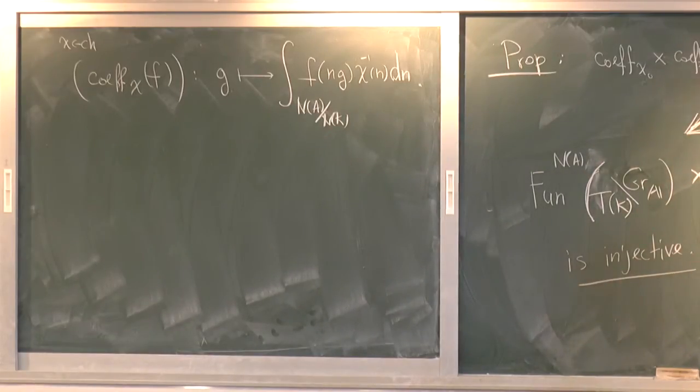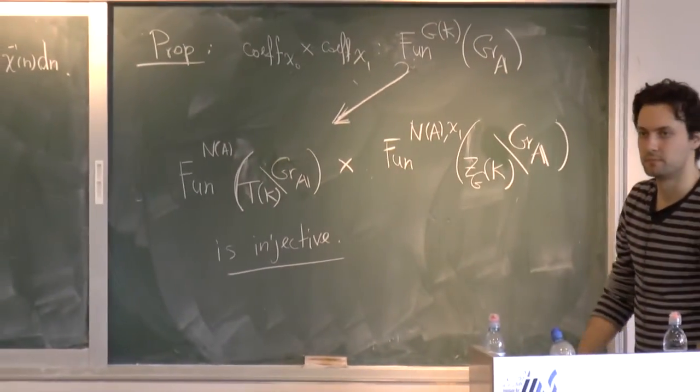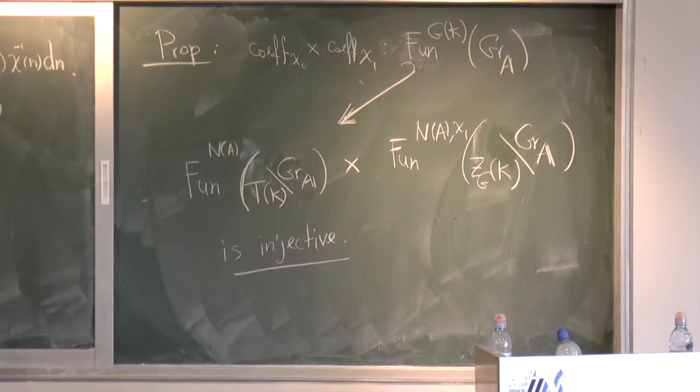So for GL2, this is the situation. I have my object of interest. I have two functions, two operations, and I land it here. And this map by the Fourier transform is injective.